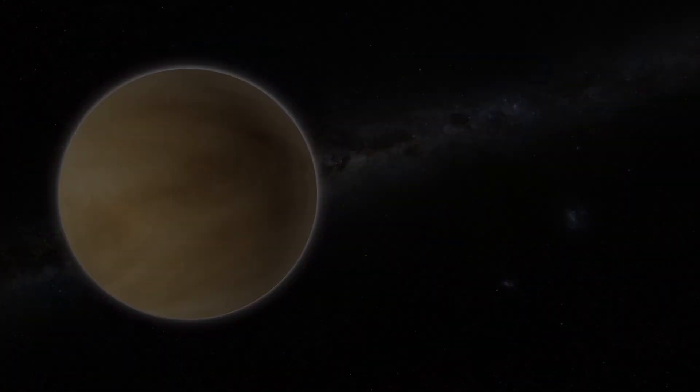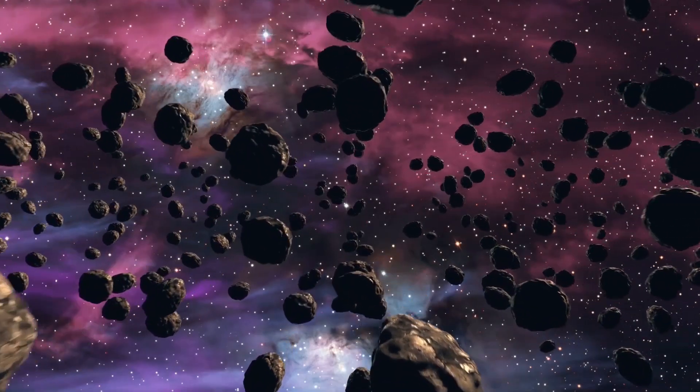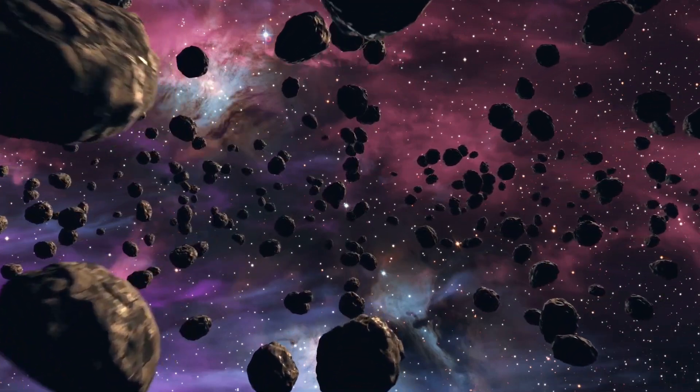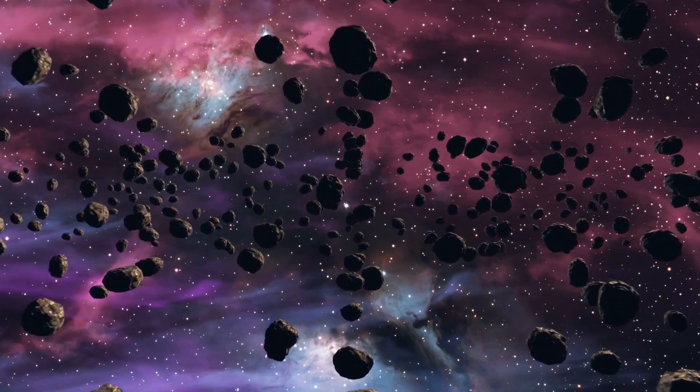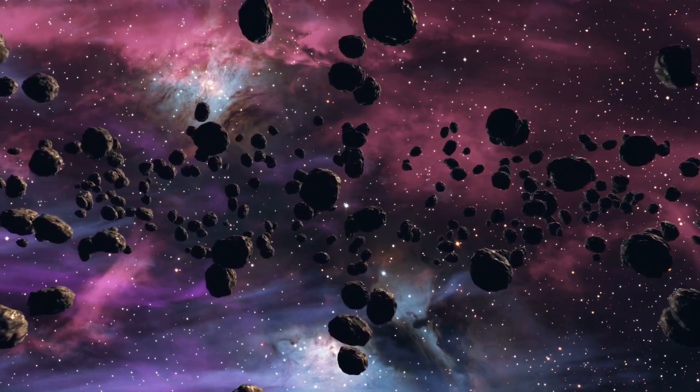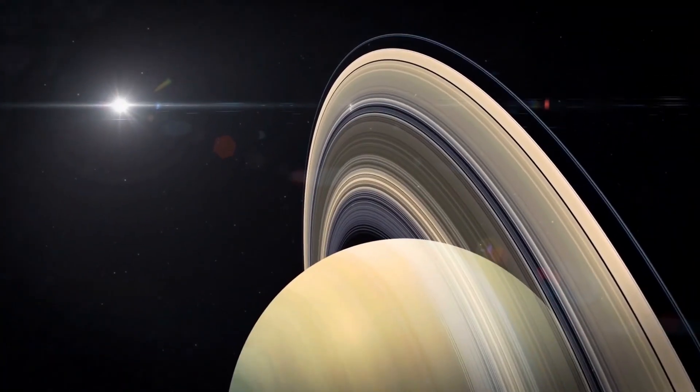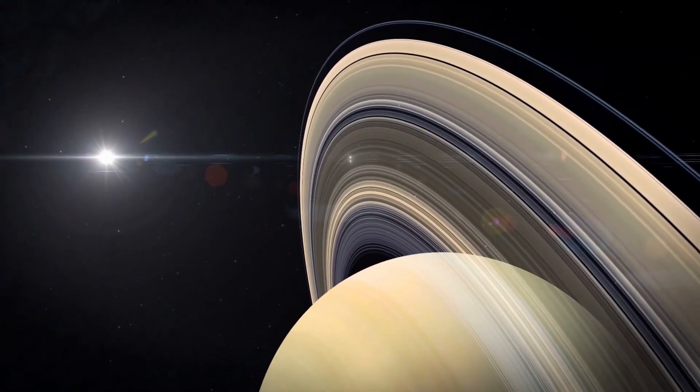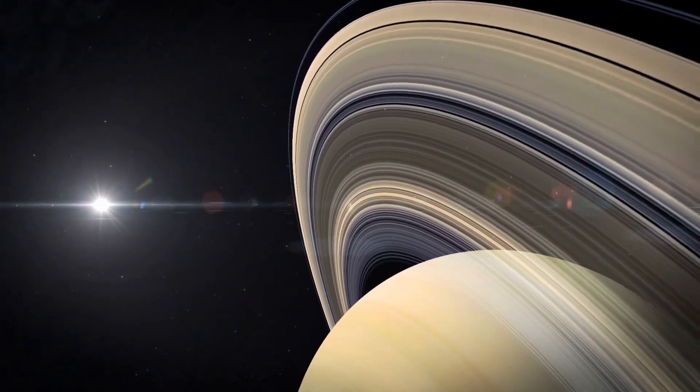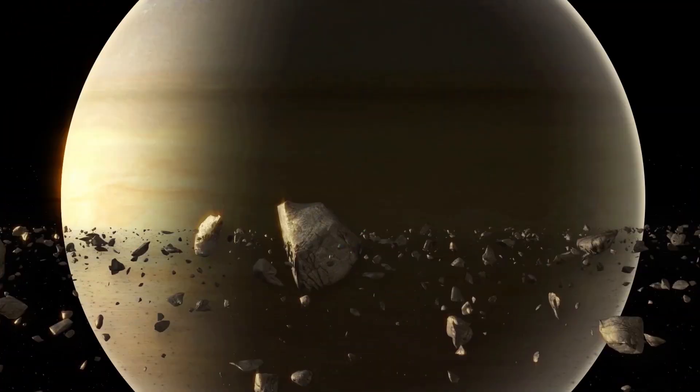The question is, why? It's possible that when WASP-39b was young, it was bombarded with comets and asteroids, which could have delivered heavier elements such as carbon and oxygen. Interestingly, the exoplanet seems to have the same amounts of heavy elements as Saturn, which astronomers also think endured a violent youth.